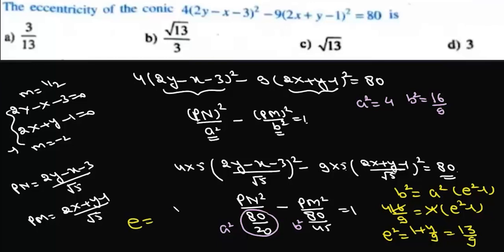Using b² = a²(e² - 1): 16/9 = 4(e² - 1), giving e² - 1 = 4/9, so e² = 1 + 4/9 = 13/9. Therefore e = √13/3, which is option B. This shows how to handle hyperbolas whose axes are perpendicular but not parallel to the coordinate axes.